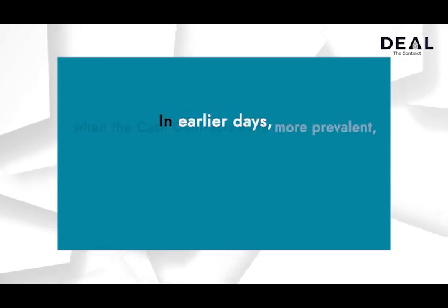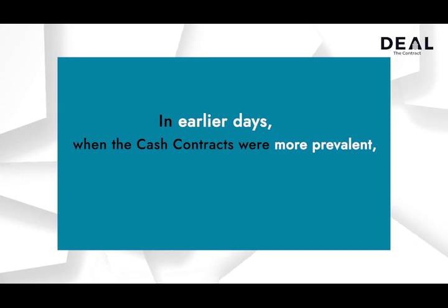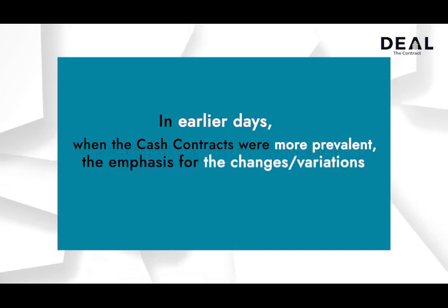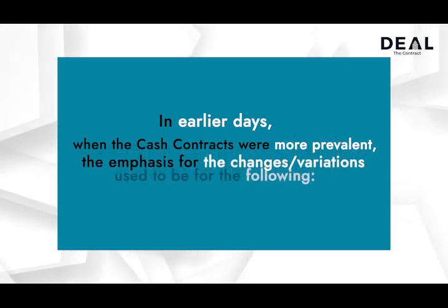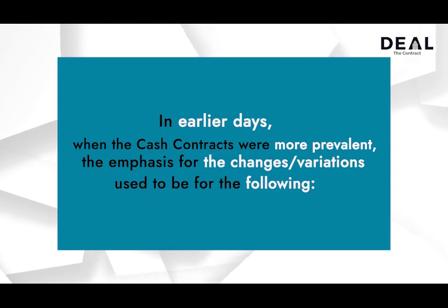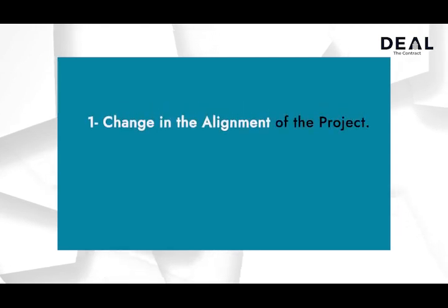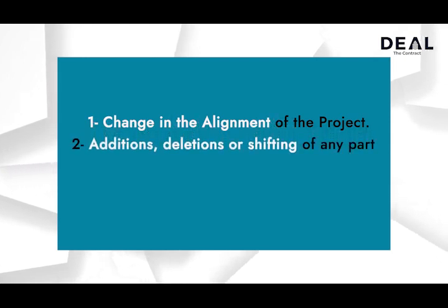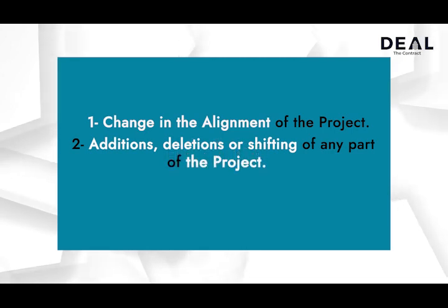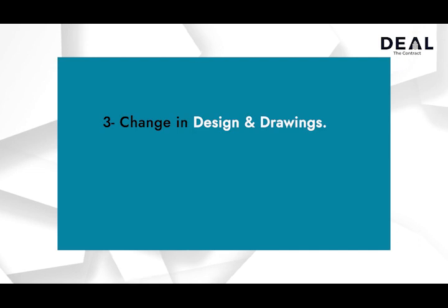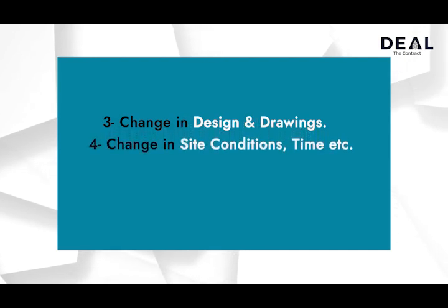In earlier days when cash contracts were more prevalent, the emphasis for changes or variations used to be for the following: 1. Change in the alignment of the project. 2. Additions, deletions or shifting of any part of the project. 3. Change in design and drawings. 4. Change in site conditions, time, etc.